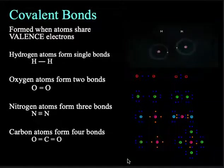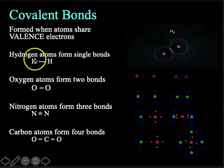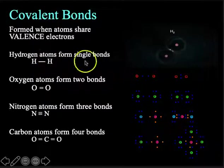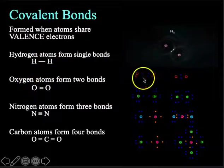Covalent bonds are bonds born out of sharing electrons in the valence shell. So, hydrogen, atomic number one, has one proton, has one electron in its outermost shell. And so, it has a tendency to form a covalent bond. There's H2. How's oxygen then? Oxygen has...